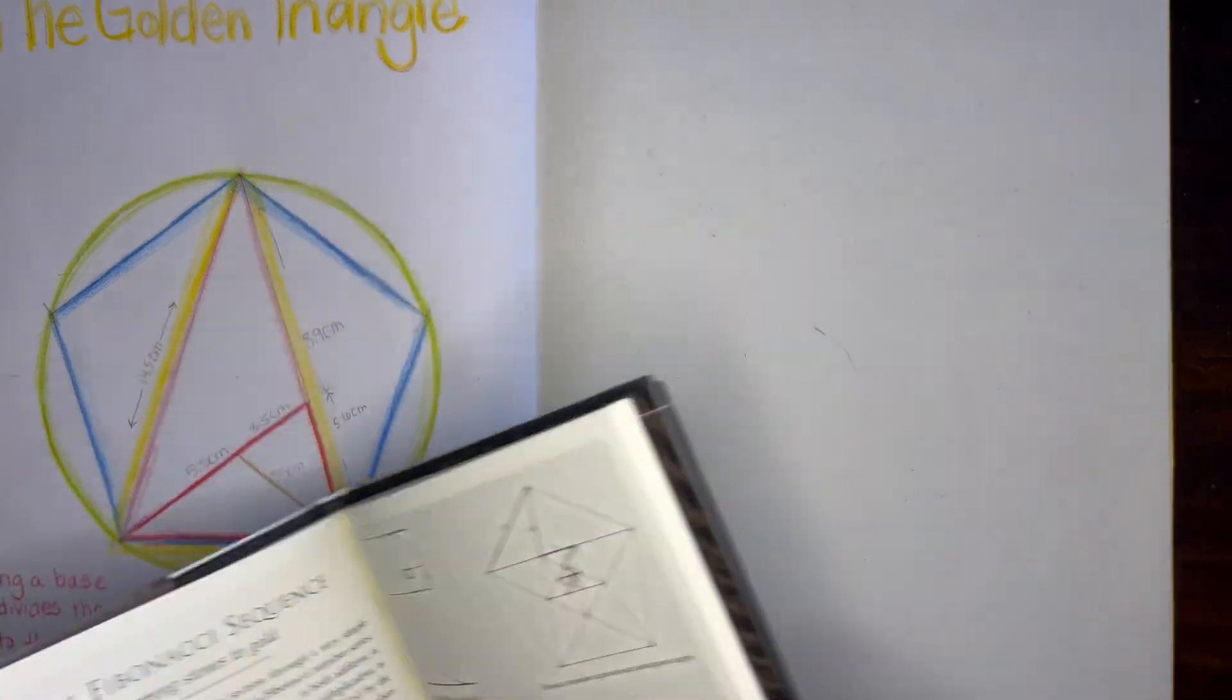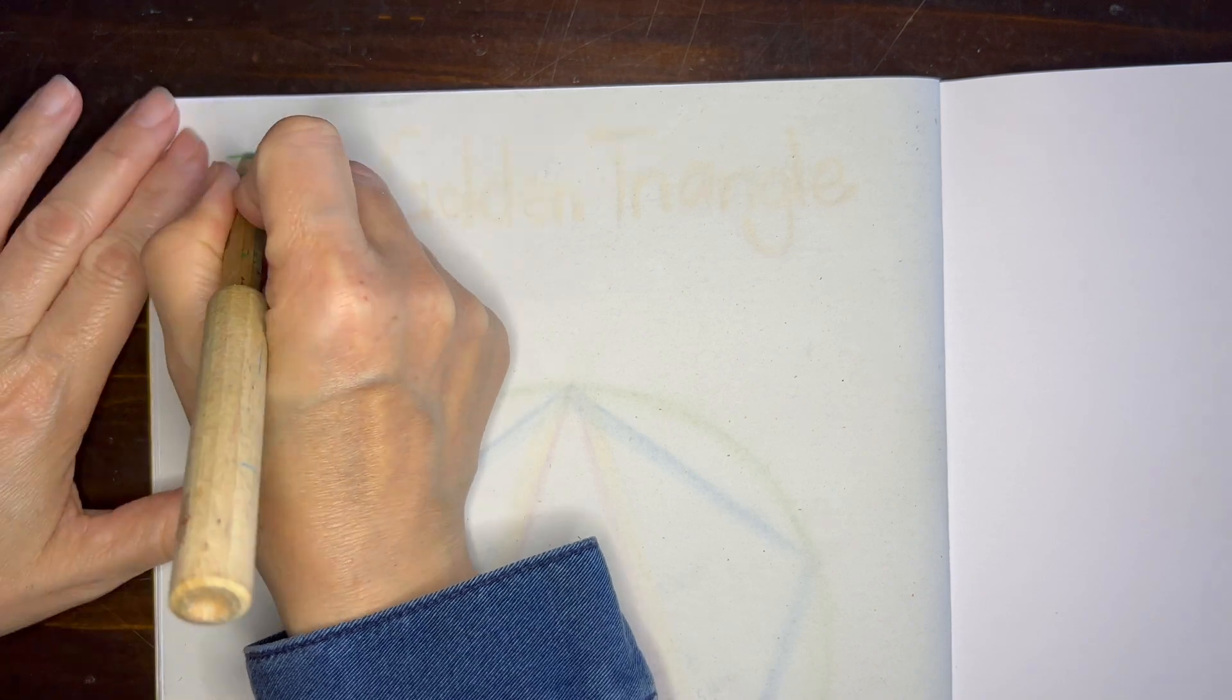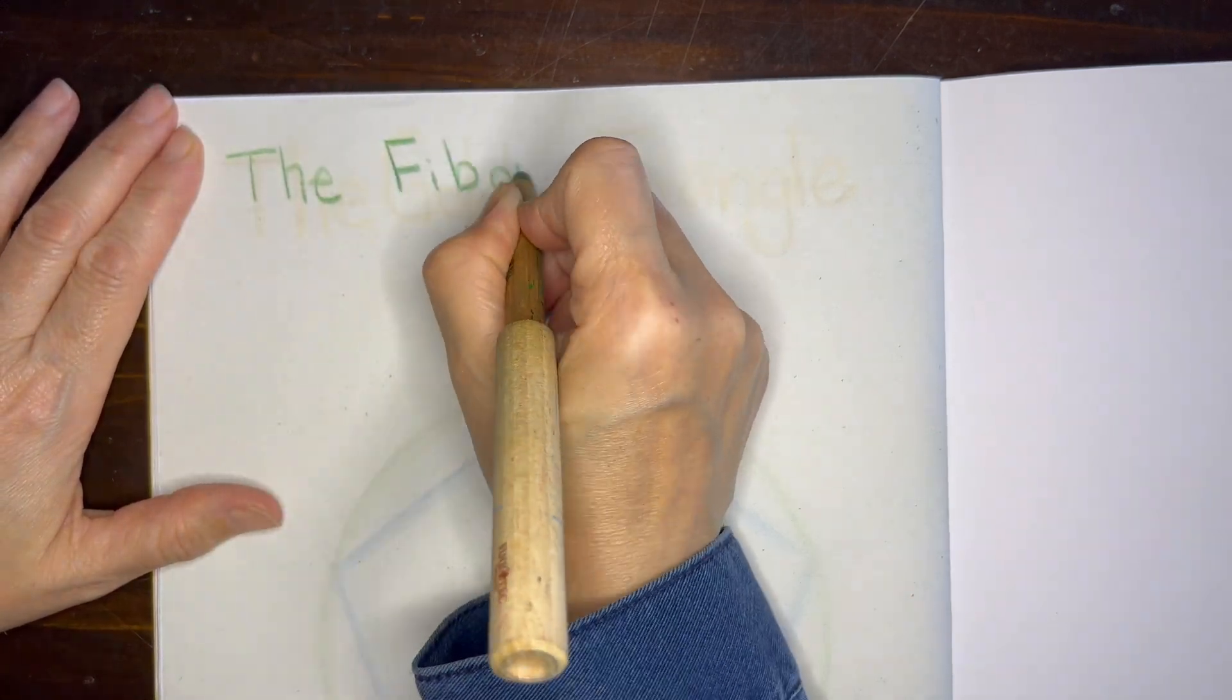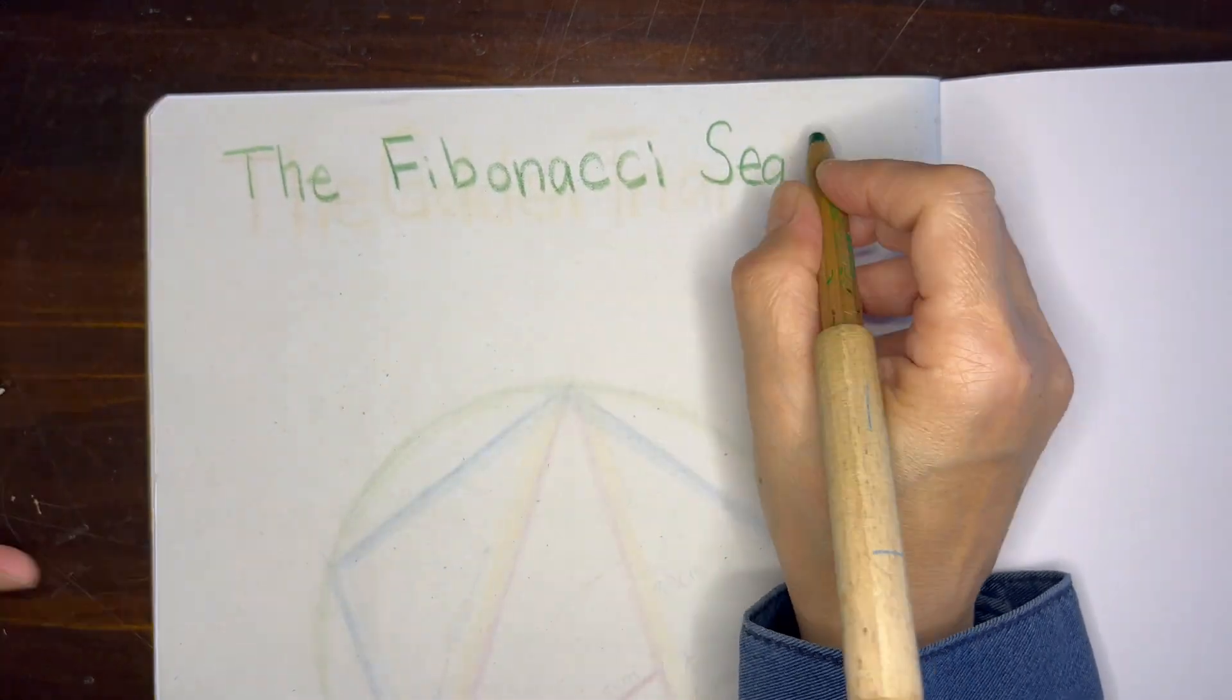So we're going to do the Fibonacci sequence, which is a little bit different than the golden section, but the higher the number you go in the Fibonacci sequence, the closer you get to the golden section.